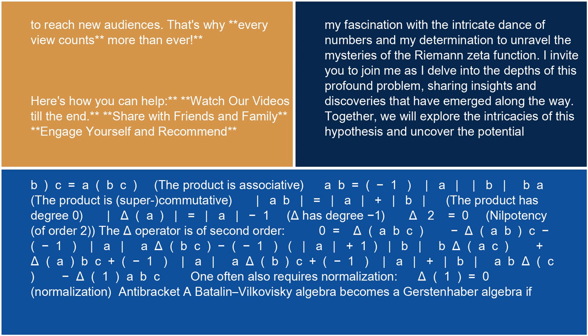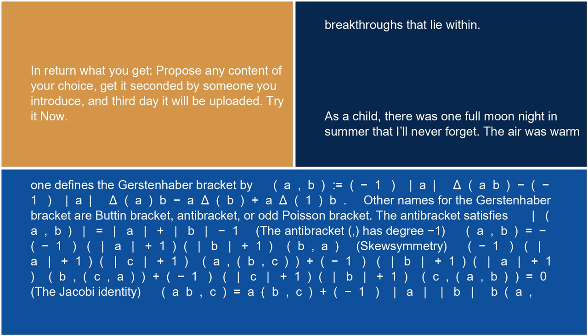An antibracket Batalin-Vilkovisky algebra becomes a Gerstenhaber algebra if one defines the Gerstenhaber bracket by (A,B) equals (minus 1)^|A| · delta(AB) minus (minus 1)^|A| · delta(A)·B minus A·delta(B) plus A·delta(1)·B. Other names for the Gerstenhaber bracket are the button bracket, antibracket, or odd Poisson bracket.